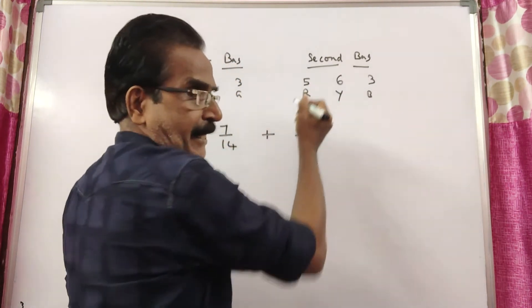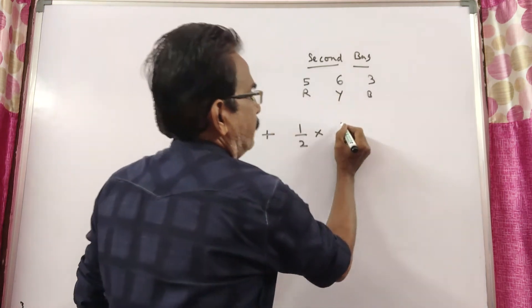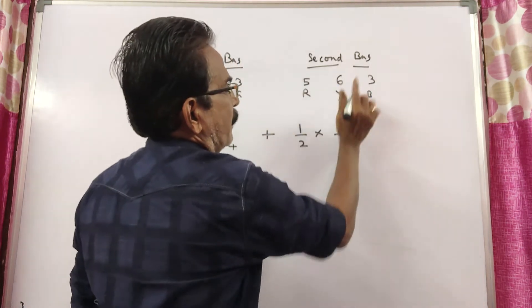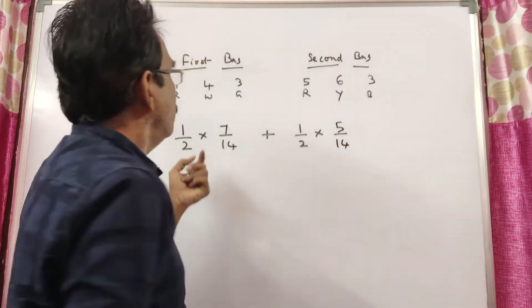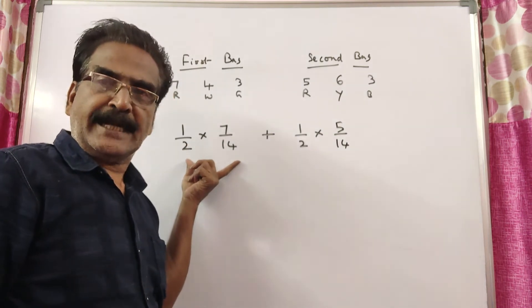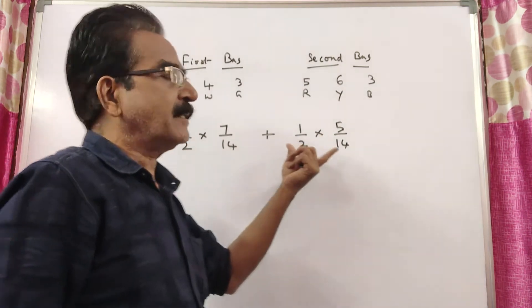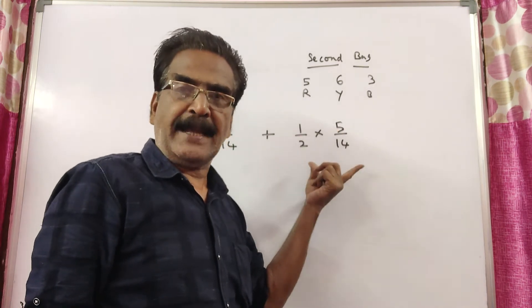And what is the probability of selecting a red ball from this bag? Red balls are 5 and the total number of balls is 14. So, this is the probability of selecting a red ball from the first bag and this is the probability of selecting a red ball from this bag.